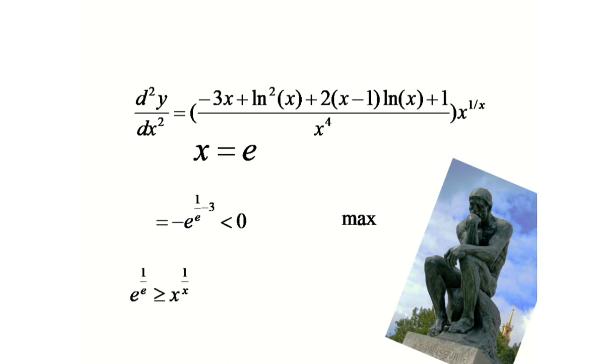If we put x equals to pi here, we will get e to the power 1 by e is greater than pi to the power 1 by pi. If we raise power pi e on both sides,